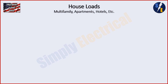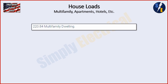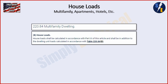First we're going to talk about what house loads are, then we're going to go to the code to see where they're used and how we put them into our calculations. The only place in the NEC that even mentions house loads is 220.84 under multifamily dwelling, because that is mainly where you're going to see these. Because of that, we're going to go to 220.84B. It says: house loads shall be calculated in accordance with part three of this article, and shall be in addition to the dwelling unit loads calculated in accordance with table 220.84B.